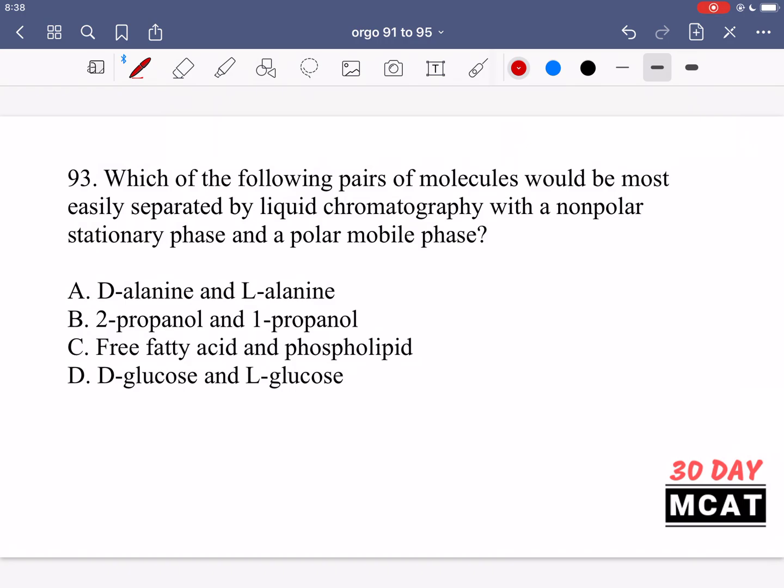In question 93 we're asked which pairs of molecules would be most easily separated by liquid chromatography with a non-polar stationary phase and a polar mobile phase. We're separating molecules based on polarity. If they have similar polarity, this is not the right method. Option A is D and L alanine - these are enantiomers, mirror images. The 3D orientation is different but the actual linkages are the same, so they have similar physical properties including polarity. We can't use liquid chromatography to separate them.